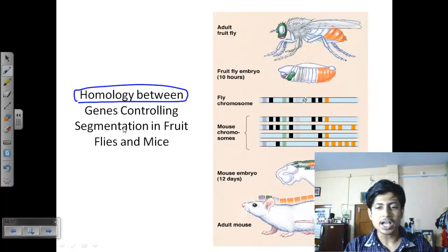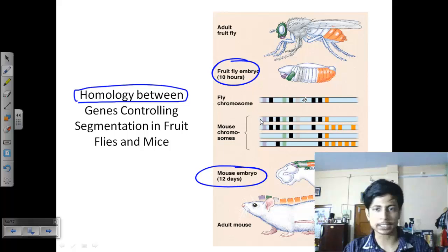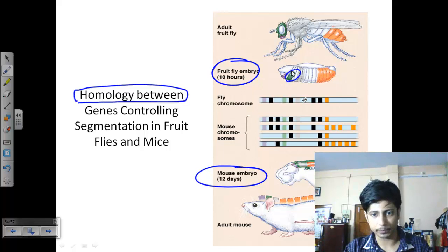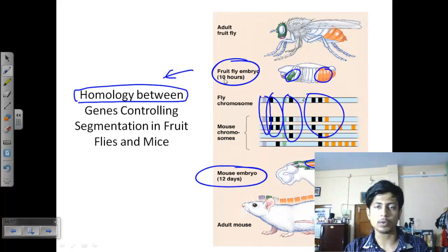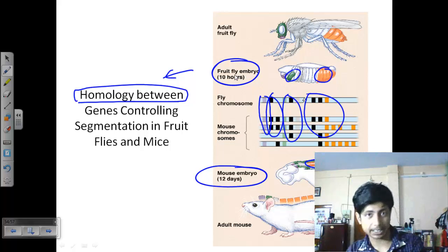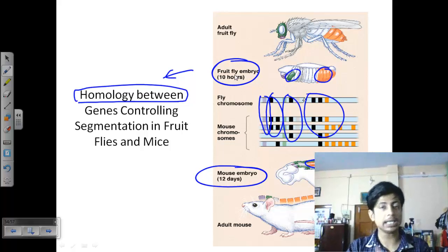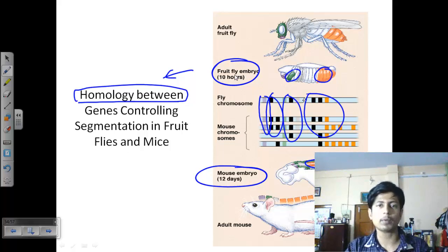There is intrinsic homology found between genes controlling body segmentation in different organisms. If you compare a 10-hour fruit fly embryo and a 12-day mouse embryo, you can see that the green region makes the head portion and the orange region makes the back — and the genetic content on the fly chromosome and mouse chromosome shows striking similarities. These homologous genes are important for development and organ formation in both insects and mammals.